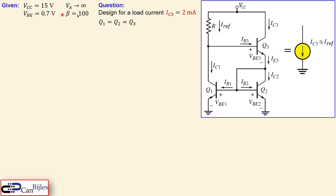We use a beta of 100, but we'll also vary it to see the effect on the load current IC3. Our design target is IC3 equal to 2 milliamps.